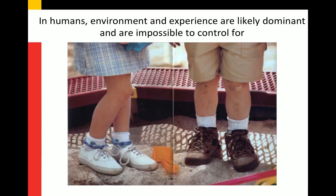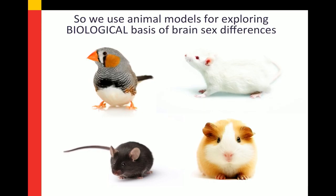Without doubt, in humans, environment and experience are likely dominant, and they're going to be impossible to control for because every one of us, by definition, has a unique environment and experience. So for us to try to understand the biological origins of sex differences in the human brain, we have to turn to a circumstance in which we can control environment and experience and then parse out biological from experiments and environment.